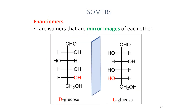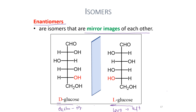The last type of isomers is enantiomers — isomers that are mirror images of each other. For example, D-glucose and L-glucose have arrangements of atoms that mirror each other. L stands for levo in Latin, meaning left, while D stands for dextro, meaning right.